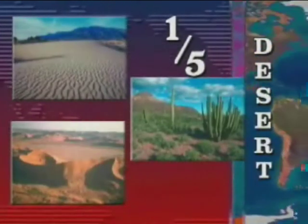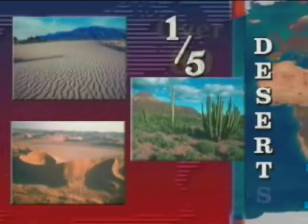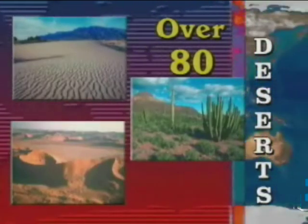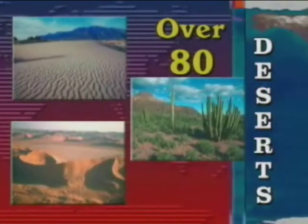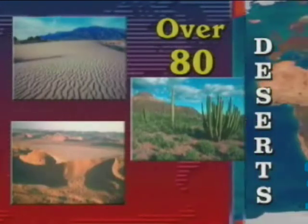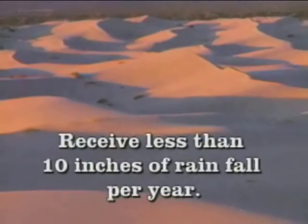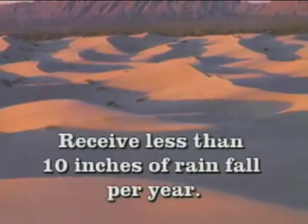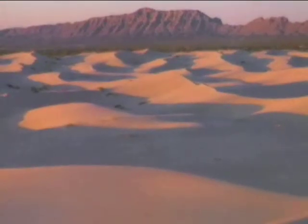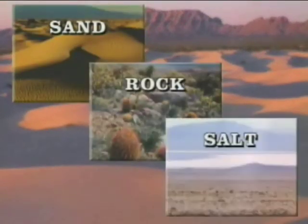One-fifth of the Earth's landmass is desert terrain. There are more than 80 named deserts on Earth, but we must not confine our perceptions of hotland environments only to desert terrain. Deserts are defined as those areas which receive less than 10 inches of rainfall per year. Deserts generally fall into one of three categories: sand, rock, or salt. A desert may be a combination of any or all of these.